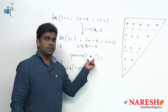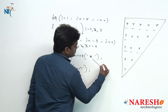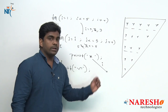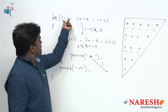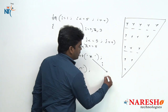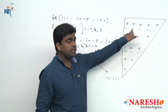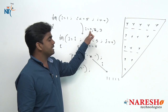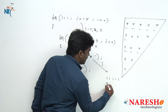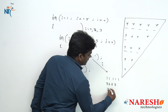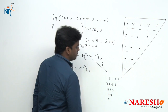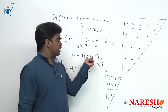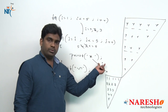Now, instead of printing a star, suppose if I print the I value — what pattern will it print? In the first iteration I value is 1, so it prints 1 five times. Next 4 times it prints 2, 3 times it prints 3, 2 times it prints 4, and 1 time it prints 5. Instead of printing a star, if you print I value it will print this pattern.